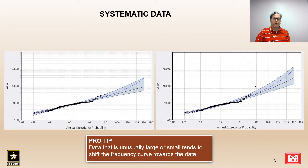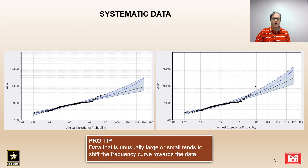Here's an example with systematic data where a large flood event during the period of record that has leverage and a discrepancy can influence the fit of the frequency curve. We see a comparison between the left and right plots with and without the large observed flood event. The plot on the right, which includes the large flood event, tends to draw up the frequency curve, increasing the standard deviation and skew, resulting in higher flow estimates for the same annual exceedance probability.